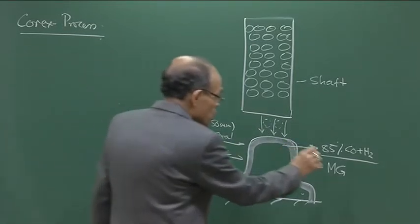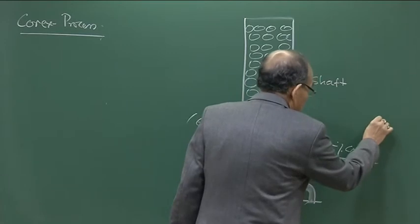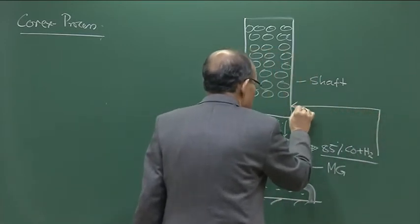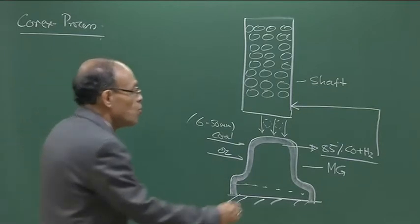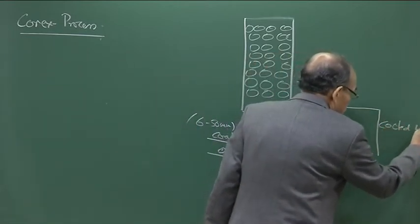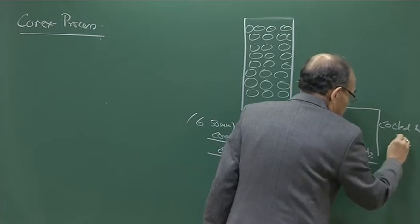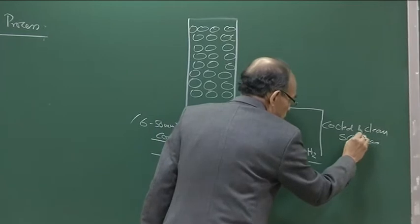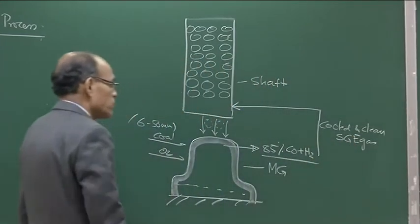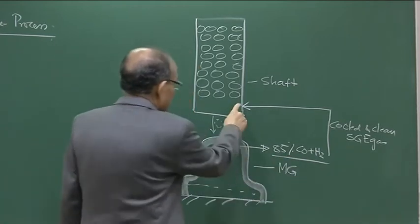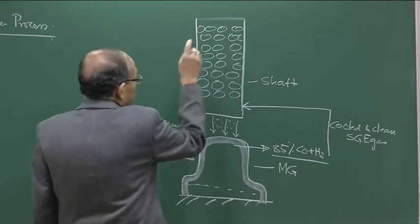We can expect that the reactions being thermodynamically feasible, there will be spontaneous production of molten iron. The gas from the melter gasifier contains almost 85 percent CO plus H₂ and is very hot because of the pure oxygen used. The gas is cooled and cleaned, and once cooled and cleaned, it is introduced into the shaft furnace. The smelter gasifier exit gas (SGE) enters the shaft and pre-reduction takes place.